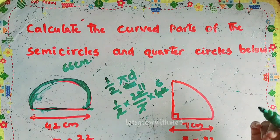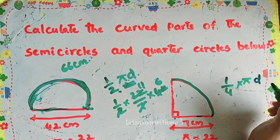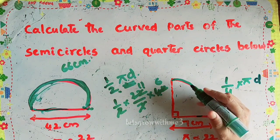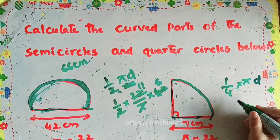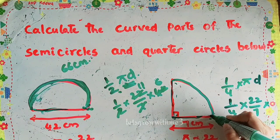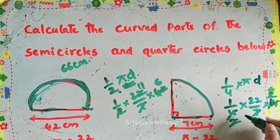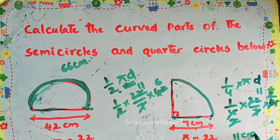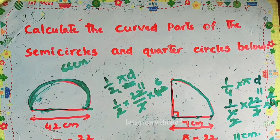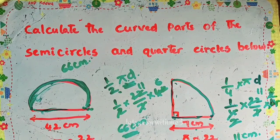For the curved part of a quarter circle, we take one-fourth of the circumference: (1/4) times π times d. Substituting values: (1/4) times 22/7 times 14 centimeters (diameter, since radius is 7 cm). Taking common factors: 7 into 14 is 2, then (1/4) times 22 times 2 is 11 centimeters. To get the perimeter of the quarter circle, add 11 cm plus two straight edges.